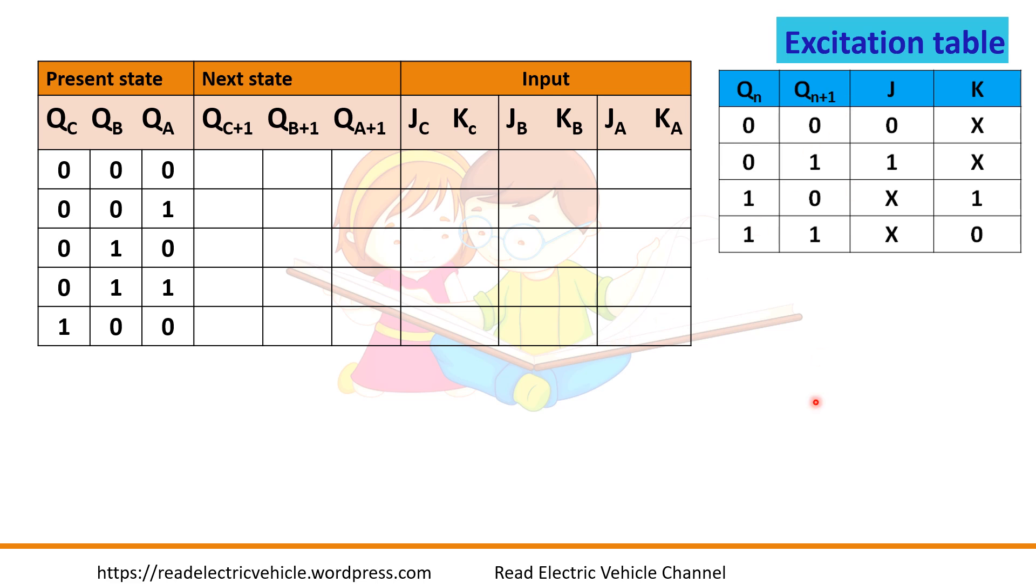So now let us design the counter. Write the excitation table of the JK flip-flop. In the same manner you fill up this table. Present state, next state, input. Since we need 3 flip-flops we are taking QC, QB, QA. 3 flip-flops. This is the present state, next state.